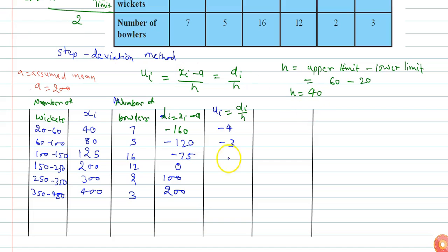Minus 120 by 40 equals minus 3, minus 75 by 40 equals minus 1.875, 0 by 40 equals 0, 100 by 40 equals 2.5, and 200 by 40 equals 5.